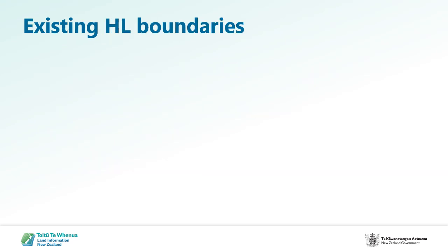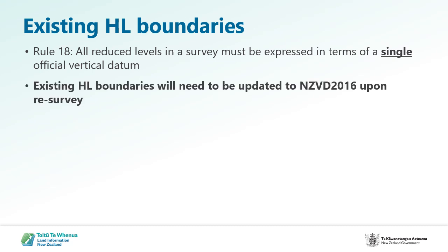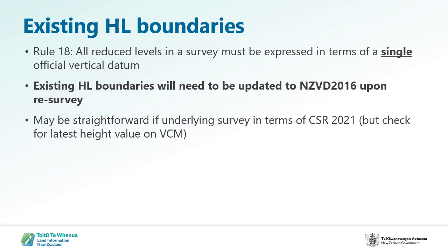Now I'll quickly discuss existing height limited boundaries. From the 1st of July, all reduced levels in a survey must be in terms of NZVD 2016. This means that where there are existing height limited parcels in a survey, the associated height limited boundaries will need to be updated to NZVD 2016. This should be straightforward if the underlying survey was carried out in terms of the 2021 survey rules, as the CSD should include a vertical control mark which will have an NZVD 2016 level.